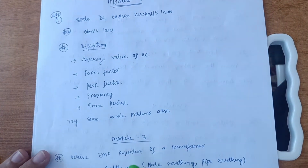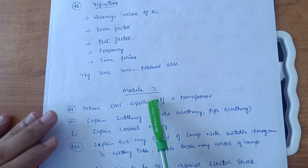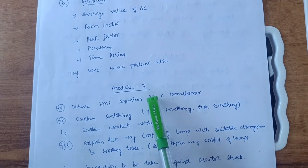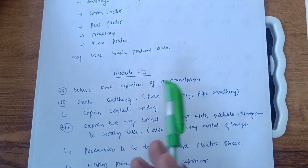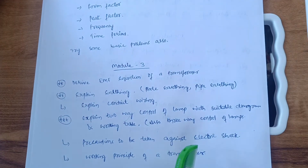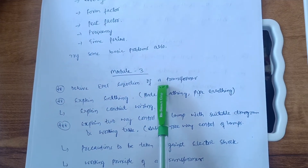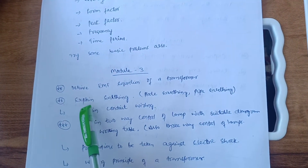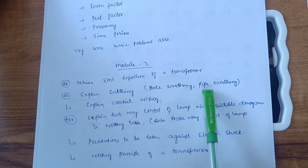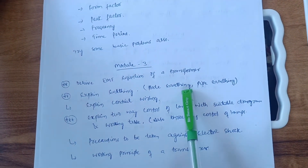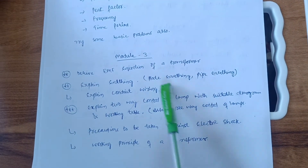The next important module is Module 3. In Module 3, go through all the theory concepts so it will be easy to cover 20 marks. The first important question is: derive the EMF equation of a transformer. The next most important question is on earthing — either plate earthing or pipe earthing. You have to focus on both these types of earthing.